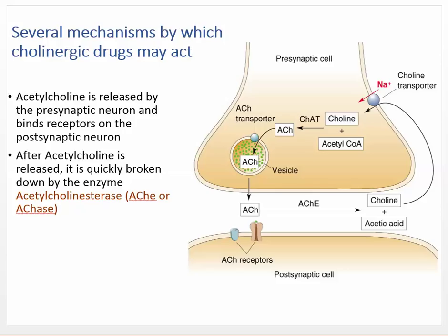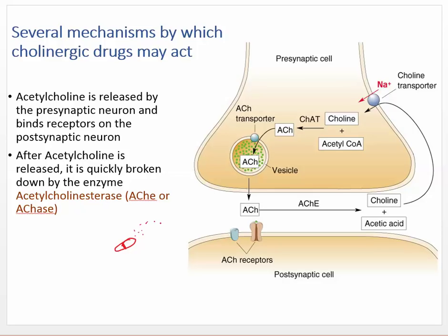Keep that in mind when you wonder how a drug can be specific to the bladder and not everything else — some of these drugs are very specific to a particular subclass of muscarinic receptors, and a lot of them will be labeled that way, like an M3 agonist. Regarding mechanisms by which cholinergic drugs may act: acetylcholine is released by the presynaptic neuron and binds receptors on the postsynaptic neuron. After that, it's quickly broken down by acetylcholinesterase — the enzyme that breaks down acetylcholine.